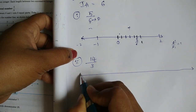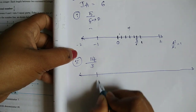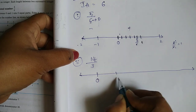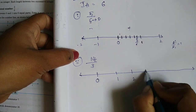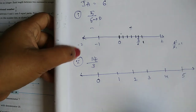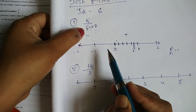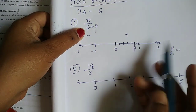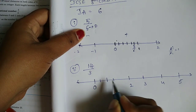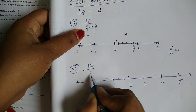We draw the number line with positive and negative numbers. Marking: 0, 1, 2, 3, 4, 5. Here is 3 and here is 6. The denominator is 3, so we have 2 lines in the middle between consecutive integers, giving 3 parts. 1, 2, 3 — the same denominator pattern. Let's work with denominator 3.